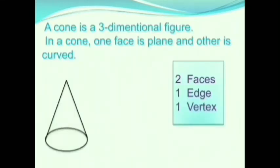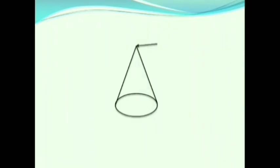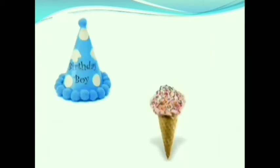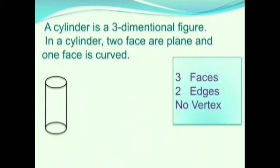Now we will learn about cone. A cone is a three-dimensional figure. In a cone, one face is plain and the other is curved. It has two faces, one edge, and one vertex. The arrow marks show the vertex and edge of the cone. Examples: ice cream looks like a cone, and a birthday cap is also an example of a cone.